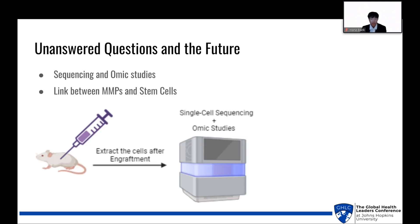Now, let's talk about some unanswered questions and the future. Even though stem cells have been a hot topic in modern medicine, there are still unanswered questions for scientists to discover. Using a sequencer, scientists can extract the cardiomyocytes and perform sequencing and omics studies. With omics studies, we can analyze the protein regulation found in the cells, which can ultimately tell us how the stem cells are being impacted by the MMPs. In the future, scientists hope to find the clear connection between MMPs and stem cells so that they can fully harness the power of both and potentially create a cure for CVD.